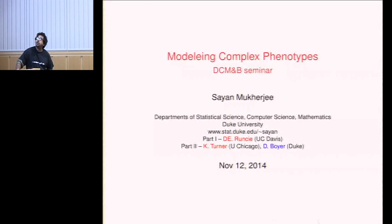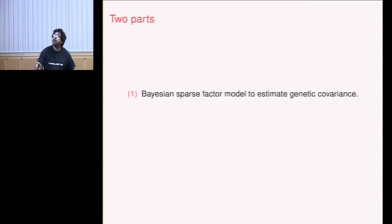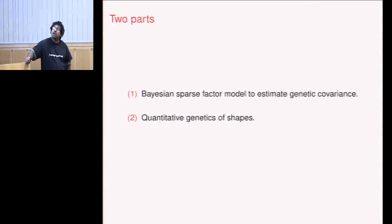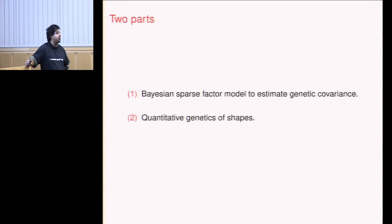I'm going to talk a little bit about work I've been doing with various colleagues. The title is 'Modeling Complex Phenotypes,' and this is a bit of a play on two versions of complex phenotypes. In the first half, I'll talk about complex phenotypes from a quantitative genetic, statistical genetic perspective. In the second half, I'll talk about how we get towards doing genetics of shape — phenotypes like brains, ankle bones, and hearts.